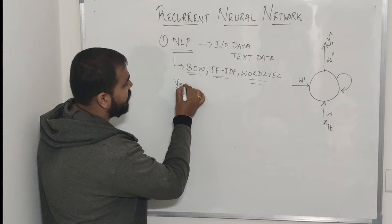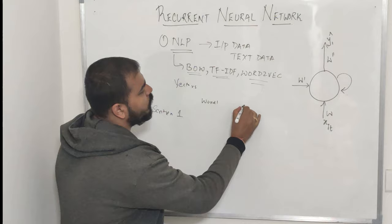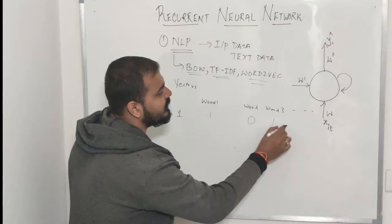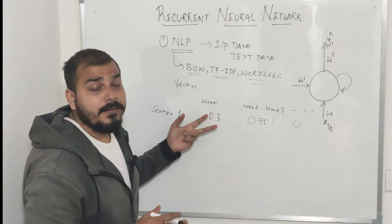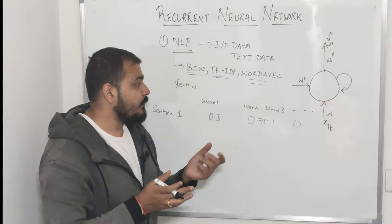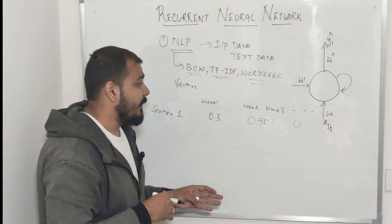These text pre-processing techniques - bag of words, TF-IDF, and word2vec - are basically converting text data into vectors. Suppose this is my sentence one with word1, word2, word3, word4. Vectors are essentially based on this sentence - the words will be given some values like 1s and 0s. If I consider TF-IDF, it will be given in form of fractions like 0.3, 0.75. Once the text data is converted into vectors, we can apply a machine learning algorithm - the most suitable being something like Naive Bayes - to find out whether a sentence is positive or negative.